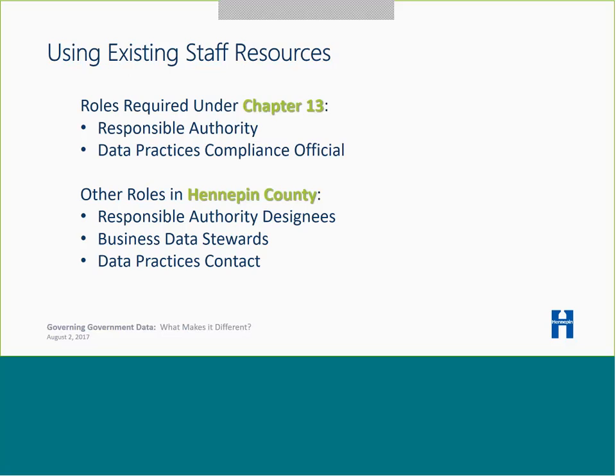We have worked to identify individuals in county departments to fulfill roles within the department. Many of these roles had already been filled on an ad hoc basis — we're simply asking them to formalize. First, the responsible authority designee: the person in the department where the buck stops for accountability with department data, often department directors and assistant directors. Second, business data stewards: people who know their data and have authority to make decisions, typically mid-level managers. Departments may have anywhere from one to fifteen data stewards depending on size and diversity of data. Finally, data practices contacts: administrative level staff who respond to requests for data from the public. Some requests are small — like a copy of an environmental report — while others can be very large, like all contracts the county has related to the Super Bowl.